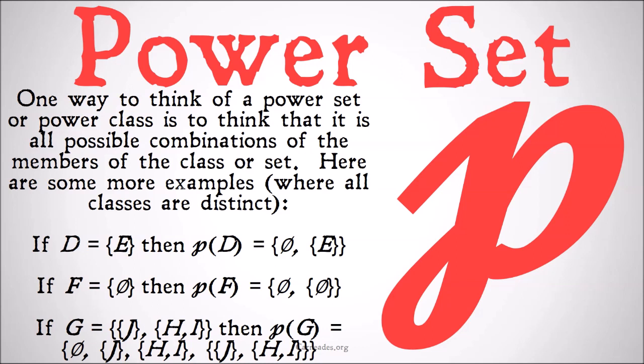If G is equal to the class of the class of J and the class of H and I, then the power class of G is equal to the null set, once again, just the class of J, the class of H and I, and the class of the class of J and the class of H and I.